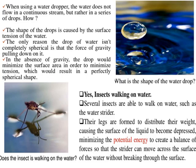Why is the shape of a water drop spherical? In the absence of gravity, the drop would minimize its surface area in order to minimize surface tension, and the shape that minimizes surface area for a given volume is a sphere.